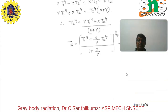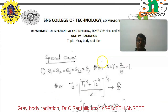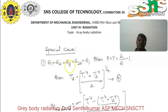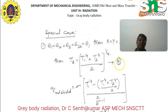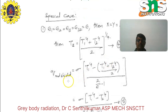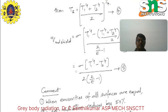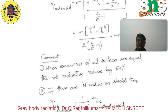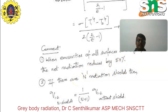For the special case where emissivity_1, emissivity_2, and emissivity_13 are all equal to emissivity, then X equals Y equals (2/emissivity − 1). This gives equation number 4 for T3. The net radiation with the shield becomes Q_with_shield equals sigma(T1⁴ + T2⁴)/2 divided by (2/emissivity − 1), which is equation 5. The key result: when emissivities of all surfaces are equal, the net radiation reduces by 50%. If there are n radiation shields, then Q_(1 to 2 with n shields) equals (1/(n+1)) × Q_(1 to 2 without shield).